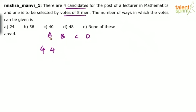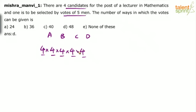The first person can give his vote in four ways, the second person in four ways, the third person in four ways, the fourth person in four ways, and the fifth person in four ways. You know the law of multiplication: if one action can be done in M ways and another in N ways, then both actions together can be done in M×N ways. So here four into four into four into four into four gives us four to the power five.